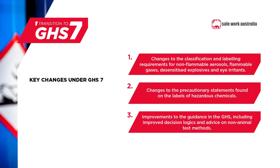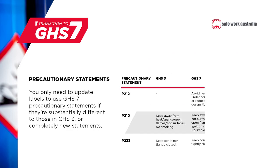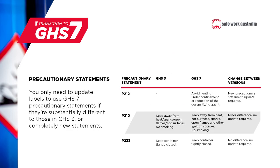Secondly, there are changes to the precautionary statements found on the labels of hazardous chemicals. Precautionary statements are written on labels and describe how to work safely with a chemical. Many of the precautionary statements in the GHS have been updated to be more accurate or easier to understand. Manufacturers and importers will need to check the precautionary statements for their products to see if they need to be updated. You will still be able to use the precautionary statements from GHS3 in most cases — you only need to use the GHS7 precautionary statements if they are substantially different or completely new. An example is shown on the screen and more information is available on our website.